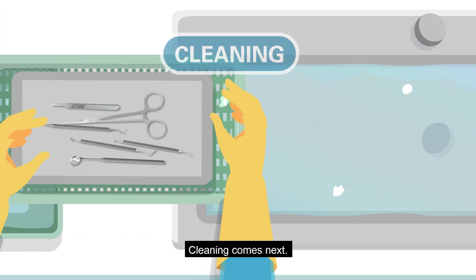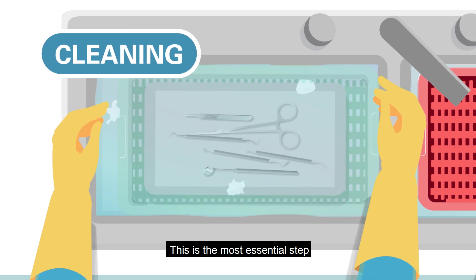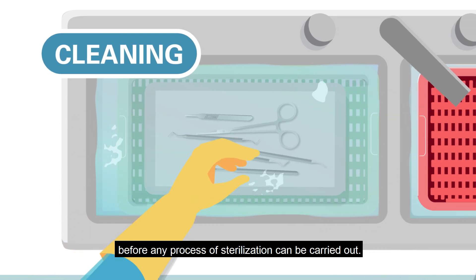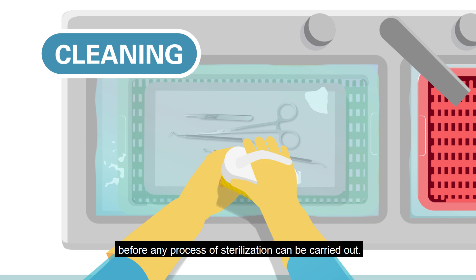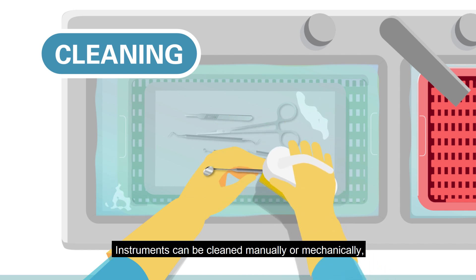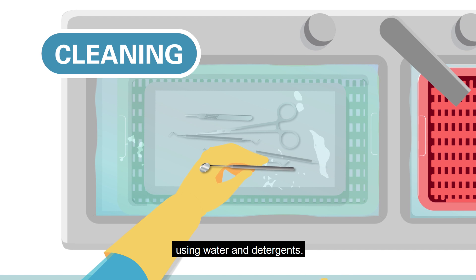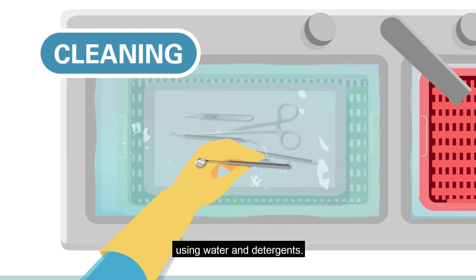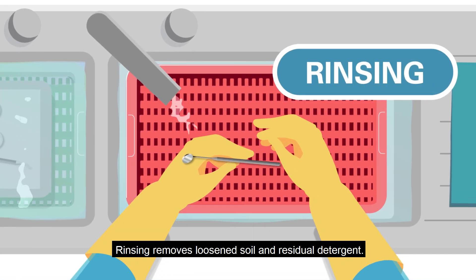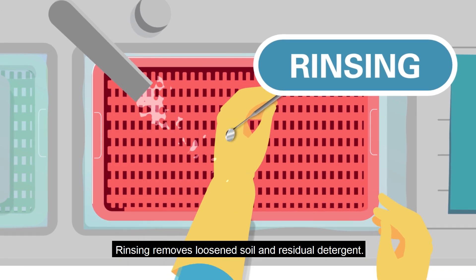Cleaning comes next. This is the most essential step before any process of sterilization can be carried out. Instruments can be cleaned manually or mechanically using water and detergents. Rinsing removes loosened soil and residual detergent.